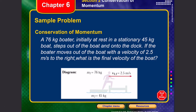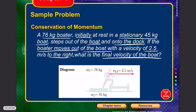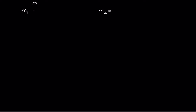Let's solve an example. A 76 kg boater initially at rest in a stationary 45 kg boat steps onto a dock. If the boater moves with a velocity of 2.5 m/s to the right, what is the final velocity of the boat? Initially there is no momentum for either the boat or person, but when the person moves, friction pushes the boat in the opposite direction. We need to find v2f.